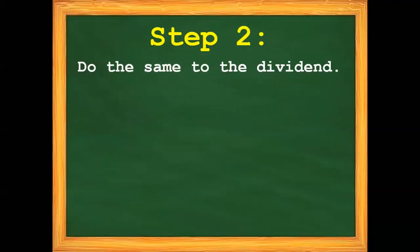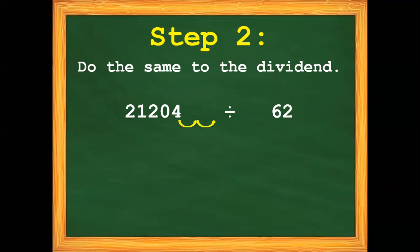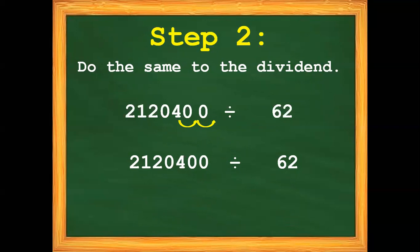Step 2: Do the same to the dividend. Our dividend is 21,204. We need to move the decimal point to the right 2 times. Since there are vacant spaces after we move the decimal point, we need to put a place value holder. So we have now 2,120,400 divided by 62.